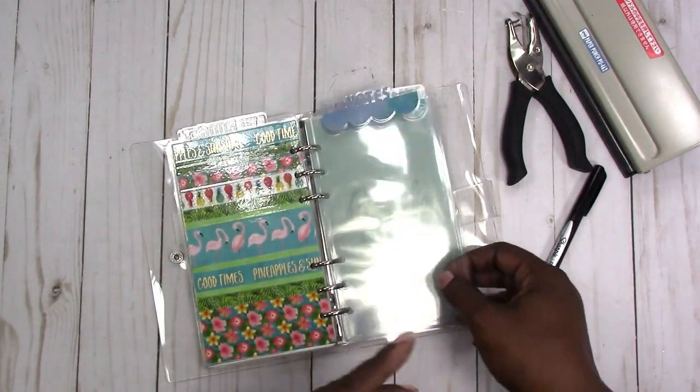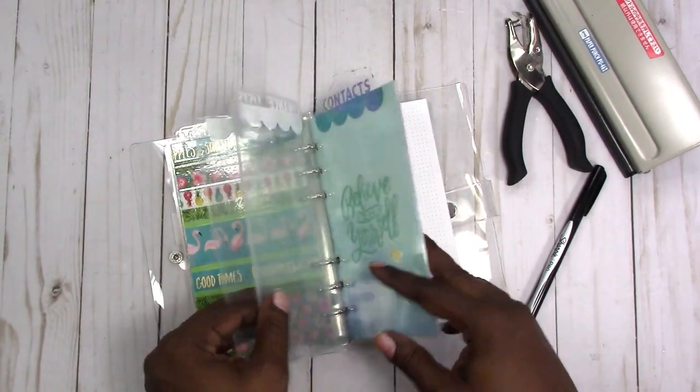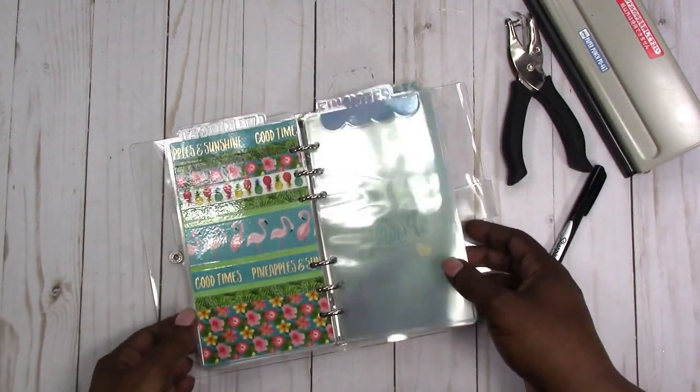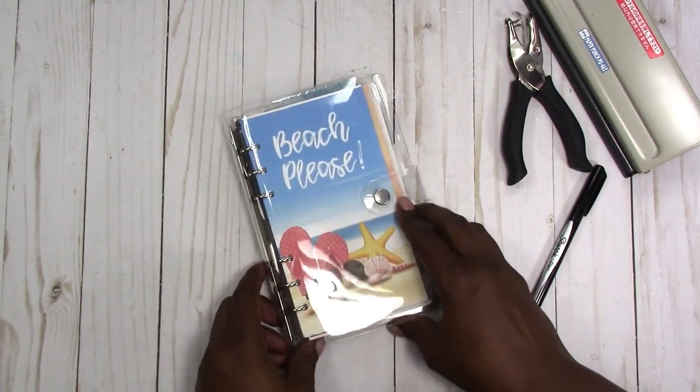So that's how you make the word tab topper clear dividers. If you have any comments or questions, please leave them below. Thanks for watching and I'll talk to you later. Bye.